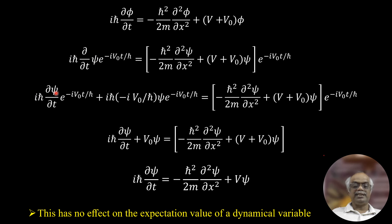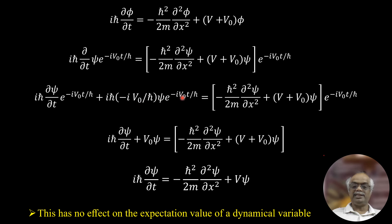On the left-hand side, we take the time derivative of psi times e to the minus i V-naught t over h-bar. First, differentiating psi gives i h-bar delta psi over delta t times the exponential. Then differentiating the exponential term gives a factor of minus i V-naught over h-bar, times psi times the exponential. On the right-hand side, since the exponential has no x-dependence, it remains unchanged.